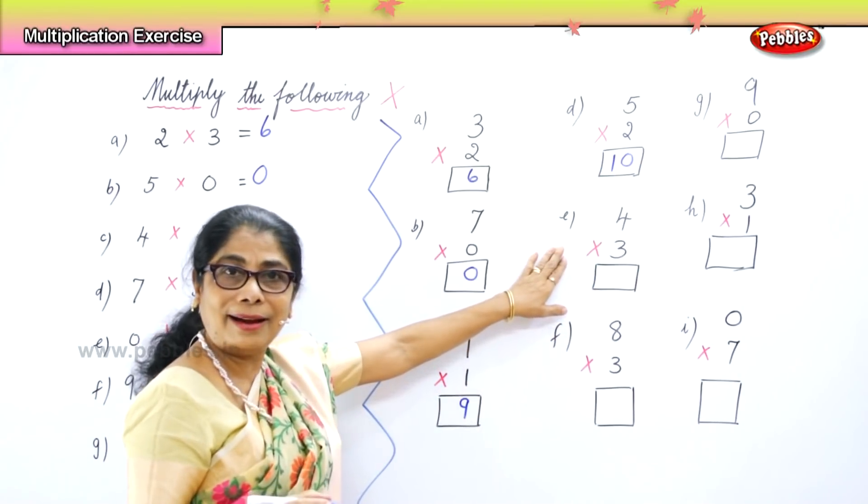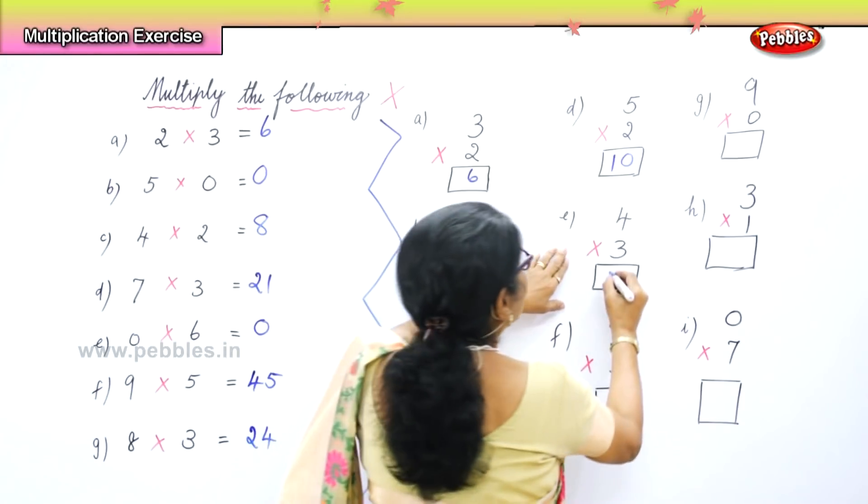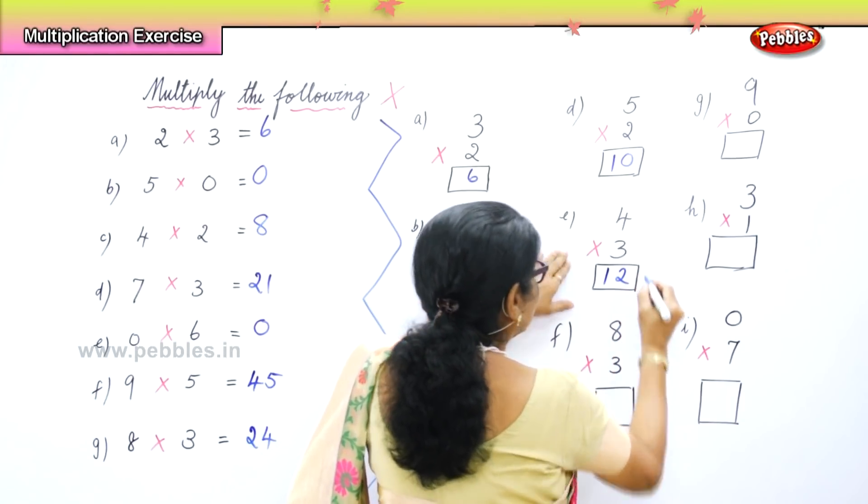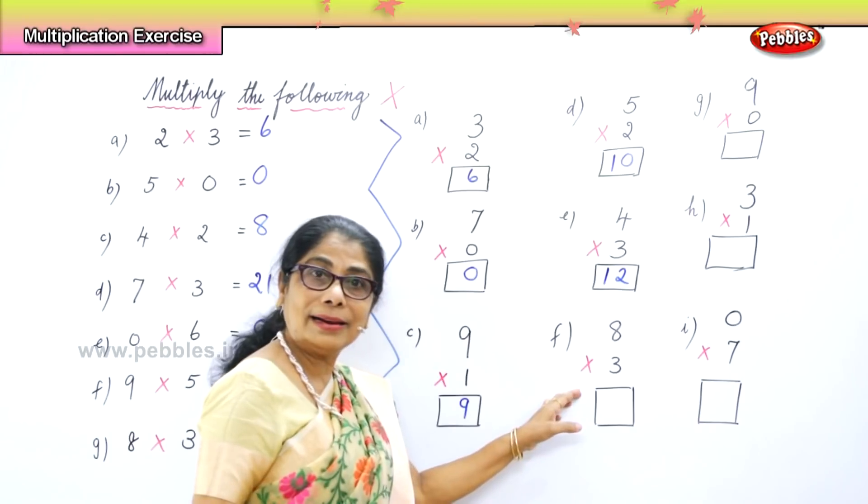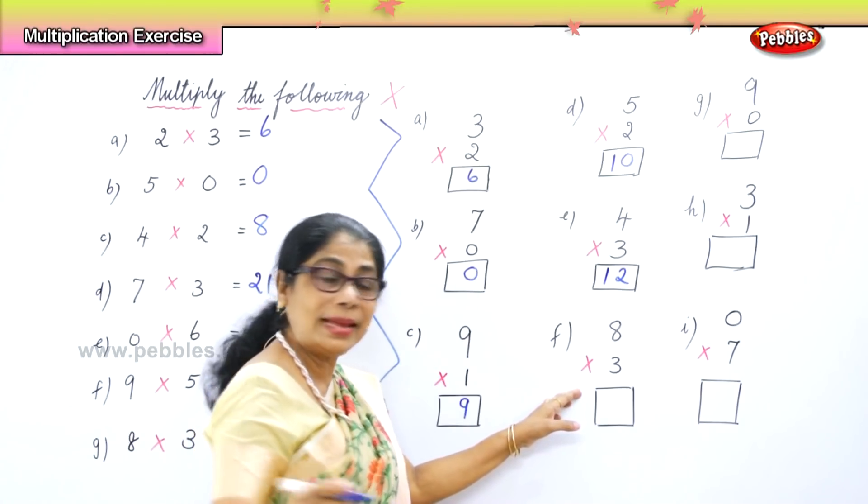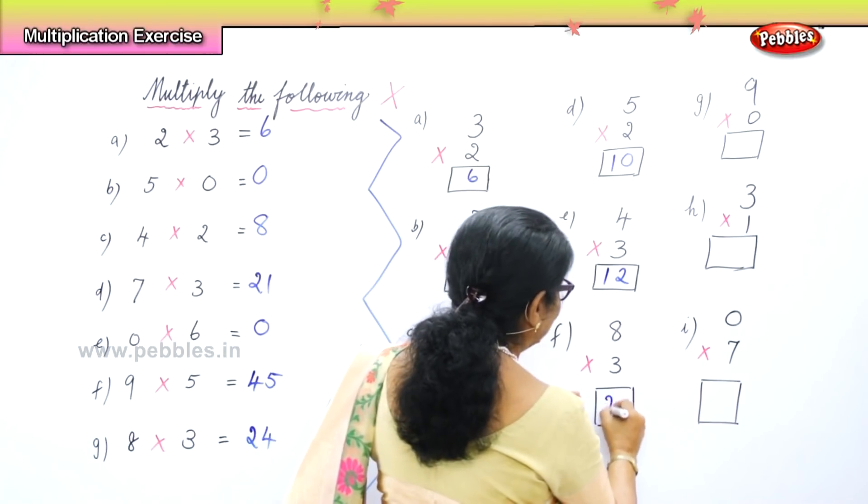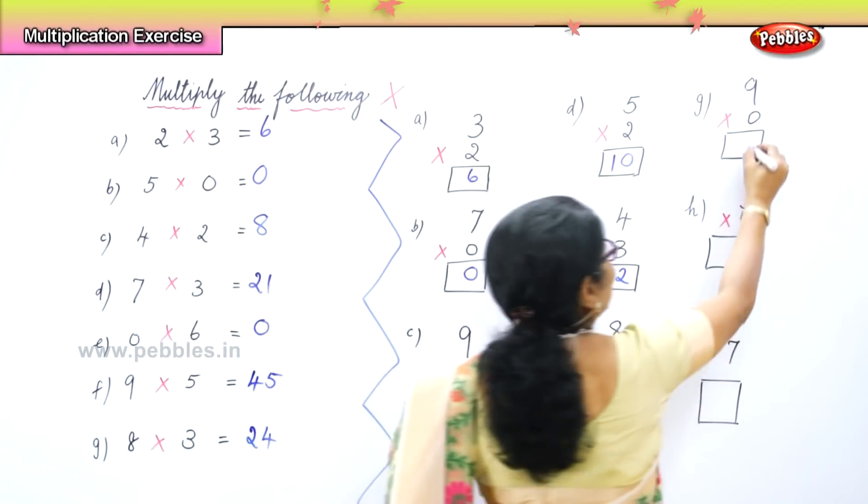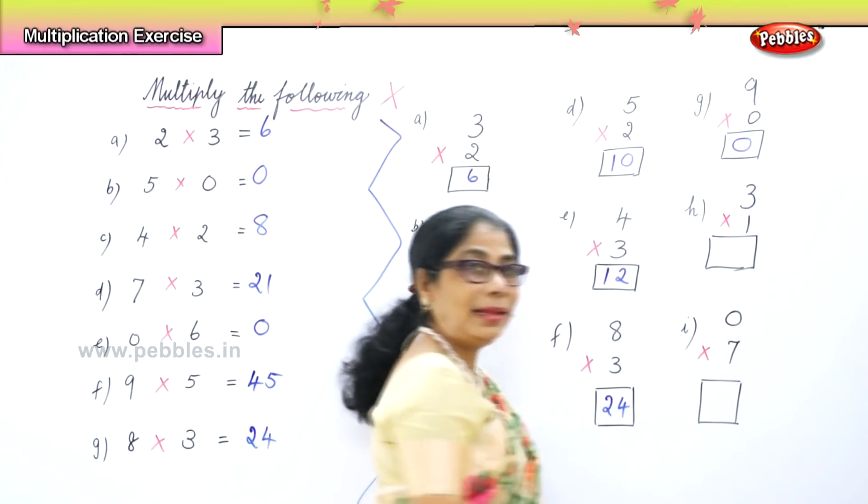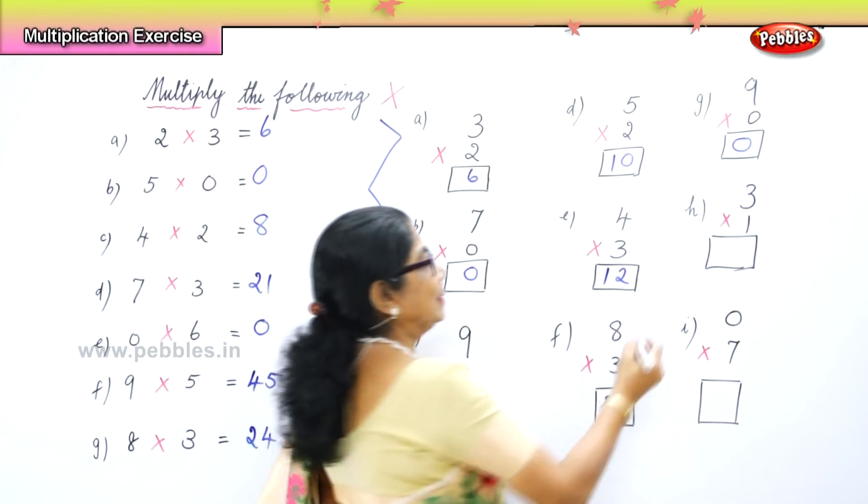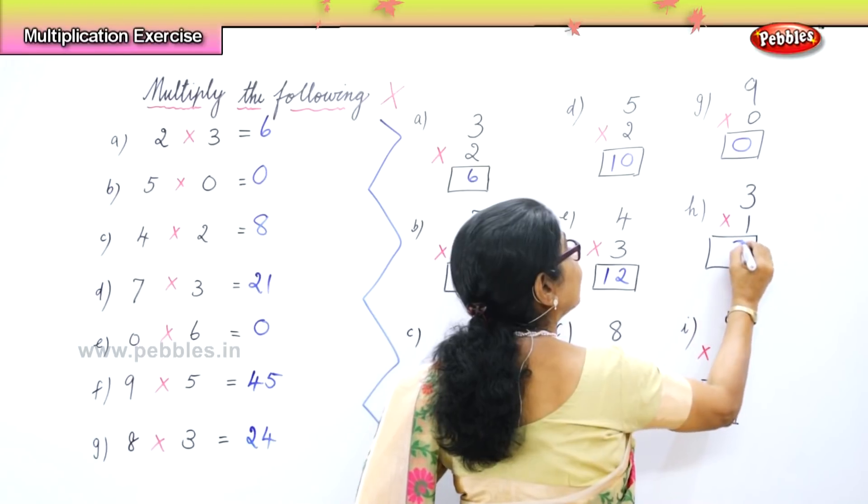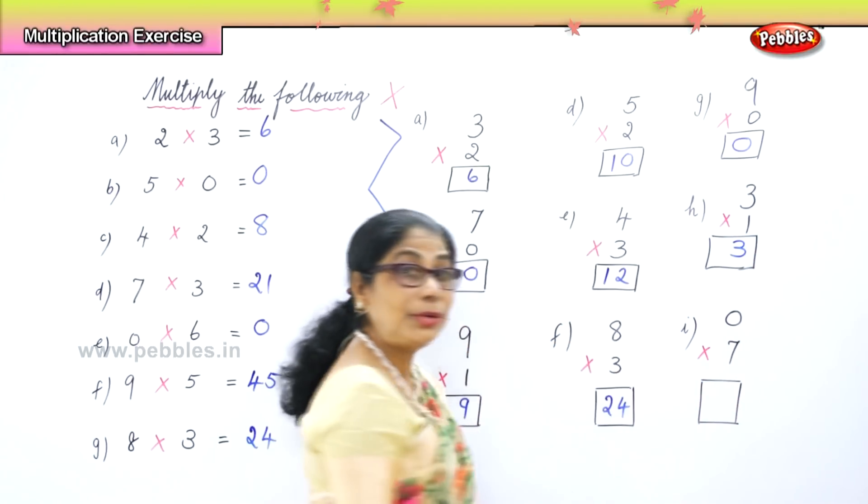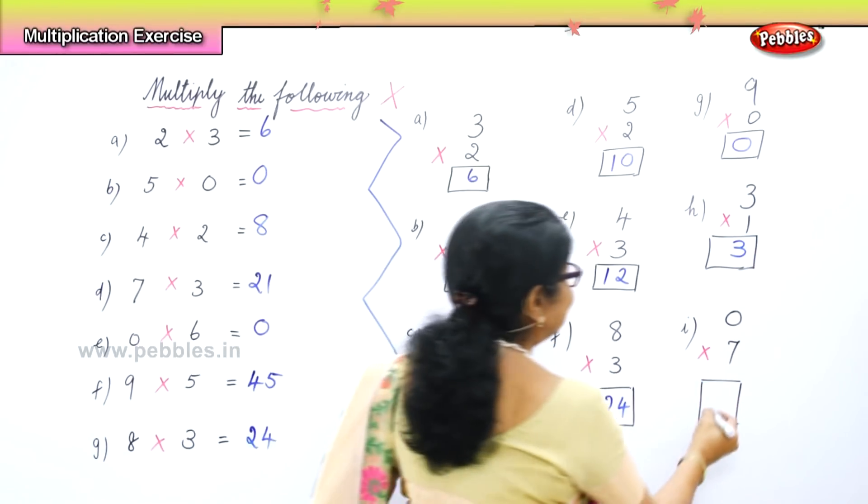Four threes are, four three times, twelve. Eight threes are, eight plus eight plus eight, twenty-four. Very good. Next, nine into zero is zero. Three into one is three itself. And zero into seven is zero.